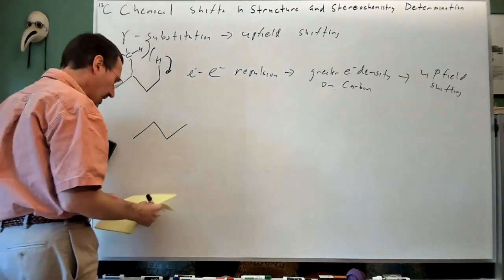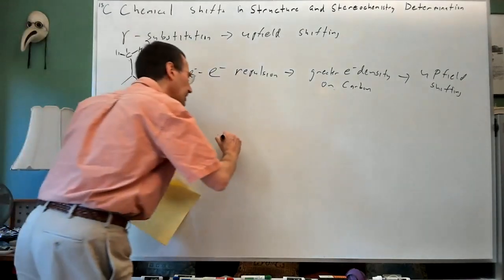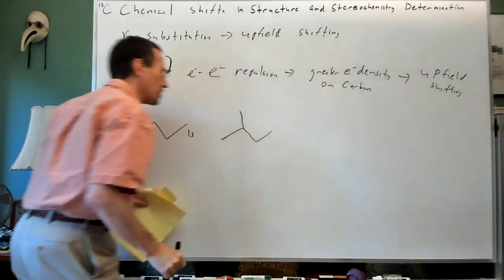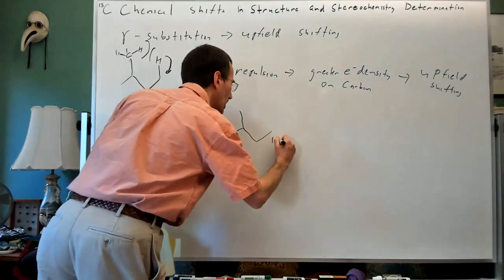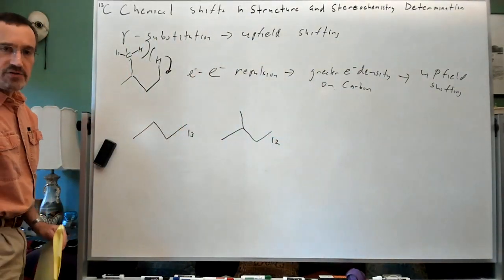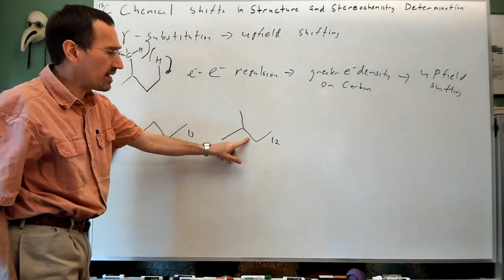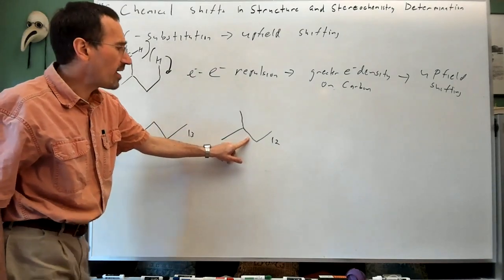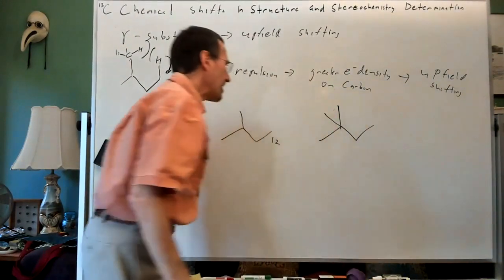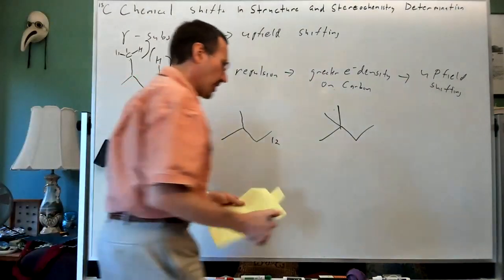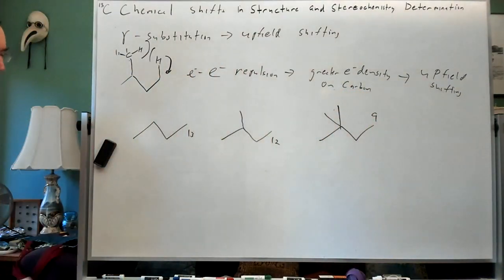Take butane: the methyl group is at 13 ppm. Adding one gamma methyl — it can keep out of the way via conformation, so the effect is small — about 12 ppm. But if you add another methyl group, now this methyl group is staring the other methyls in the face, and we're now up to 9 ppm, showing clear upfield shifting from the gamma effect.